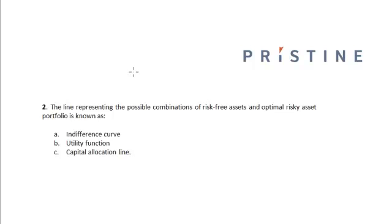The line representing the possible combinations of risk-free assets and optimal risky asset portfolio is known as the Capital Allocation Line. The investor's utility function represents the investor's preference in terms of risk and return.